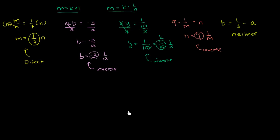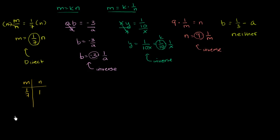To make that clear, let's look at two examples. In direct variation, if you scale up one variable, you scale up the other by the same amount. With m and n: when n = 1, m = 1/7. When n = 7, m = 1. So scaling n up by 7 also scales m up by 7. That's direct variation.